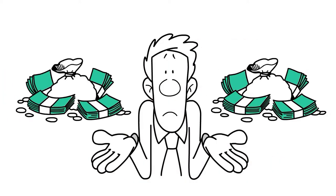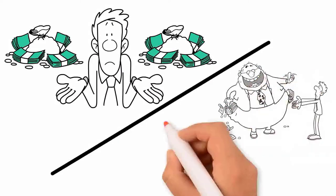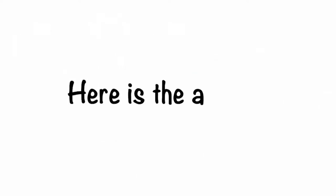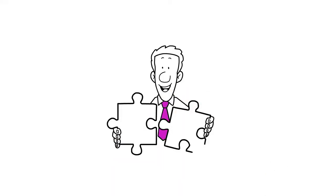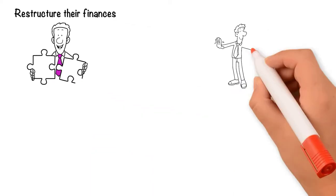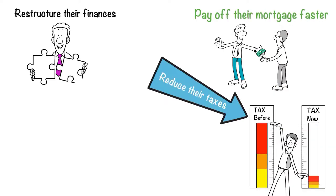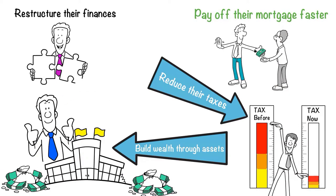What is the secret to becoming wealthy? What do they know that you don't? Here's the answer. They restructure their finances to pay off their mortgage faster, reduce their taxes and build wealth through assets.